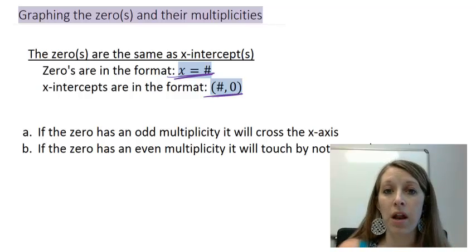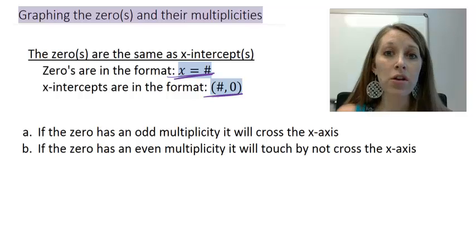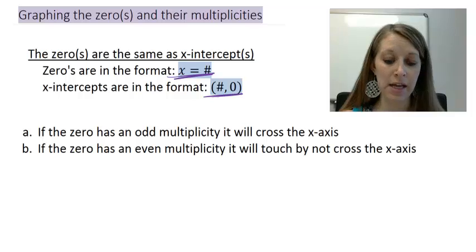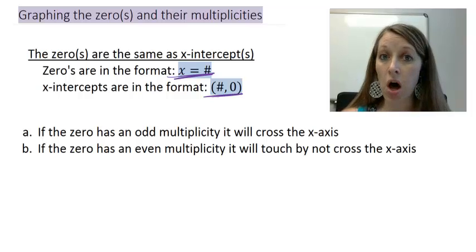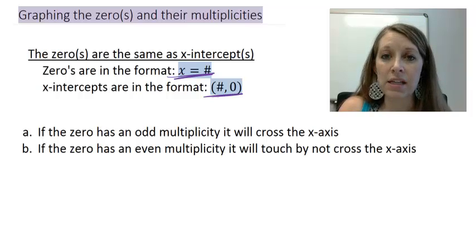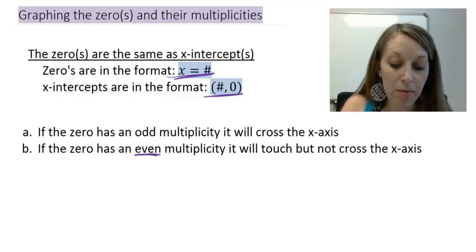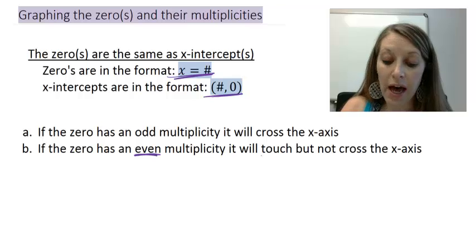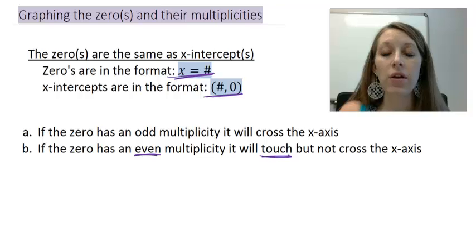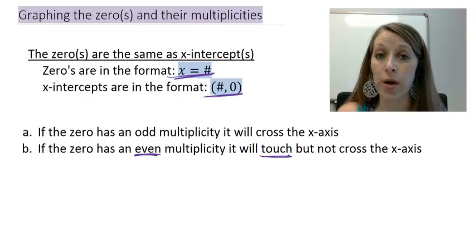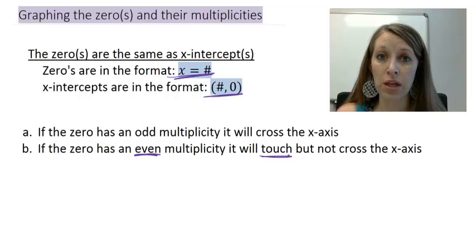We're going to graph our zeros by plotting them on the x-axis. Another trick to note about zeros is using their multiplicities. If it has an odd multiplicity, it will go through that x-intercept — it will pass through the x-axis. If it has an even multiplicity, it will touch the x-axis but will not go through it. It will hit that zero and bounce back the same direction it came from.